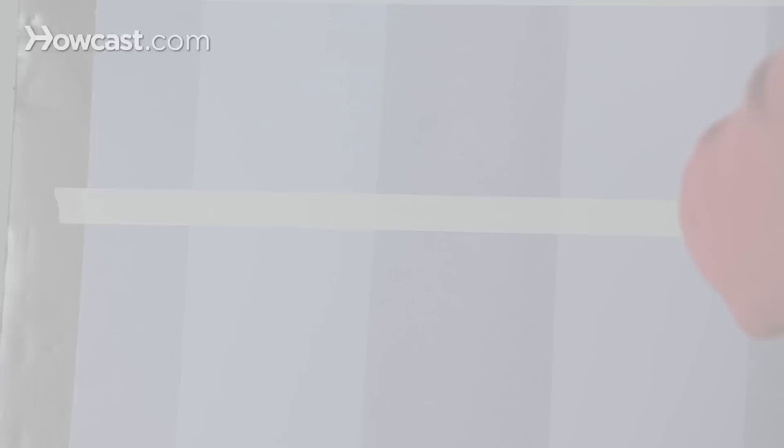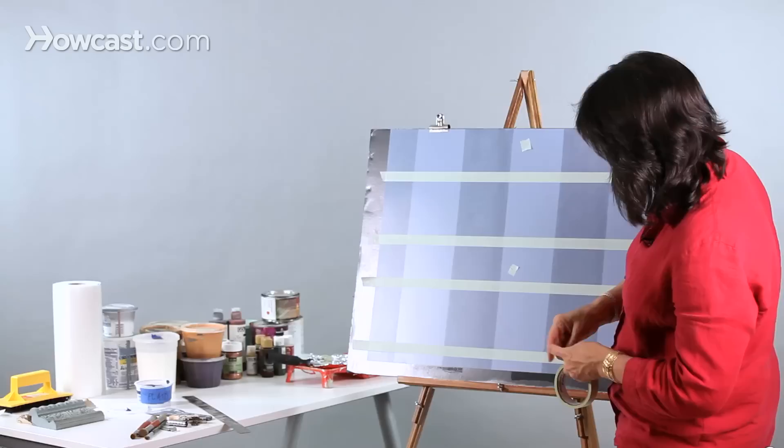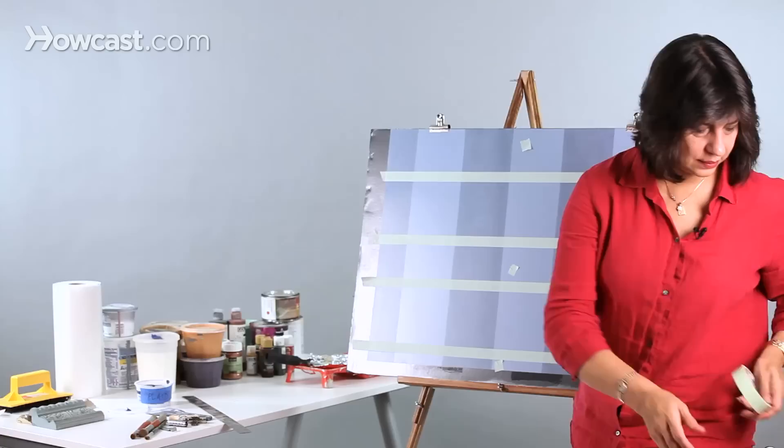So now we're all taped up, and we have the same thing as we did in part one. Try and block off these, so you know that you are not supposed to glaze on this stripe, but glaze just on this one and this one. Back to our glaze and trusty roller.